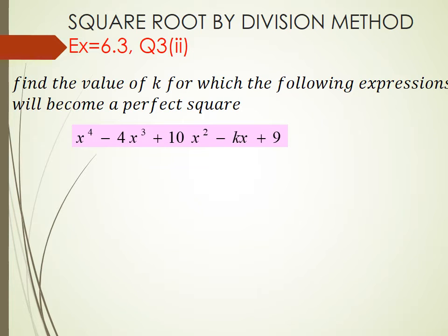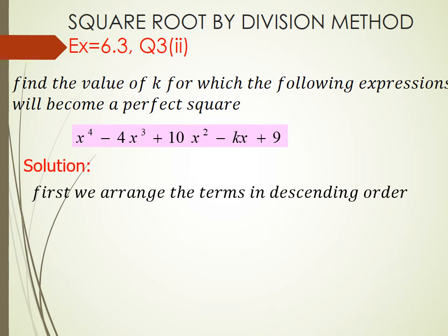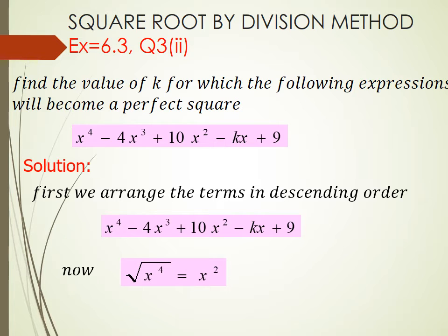x raised to the power 4 minus 4x cube plus 10x square minus kx plus 9. First we arrange the terms in descending order. x raised to the power 4 minus 4x cube plus 10x square minus kx plus 9. Now square root of x4 equals to x square.